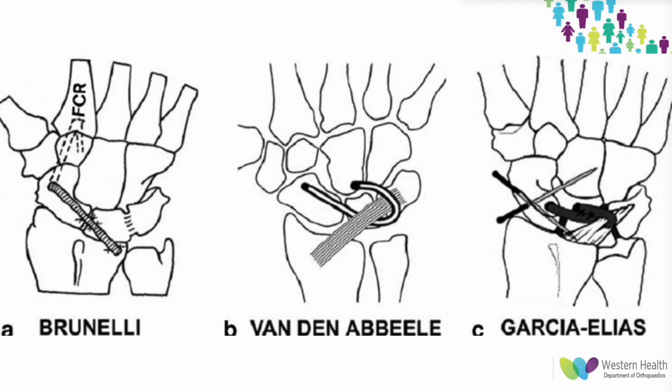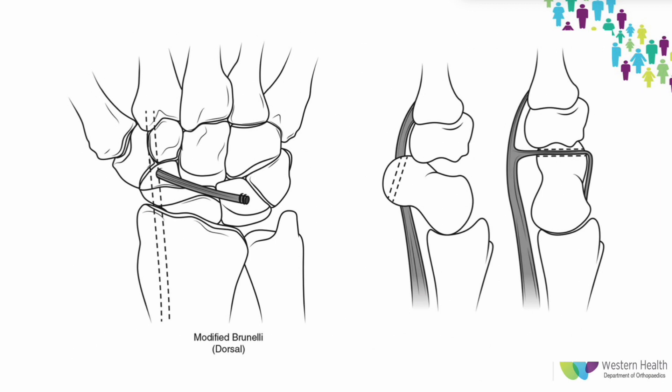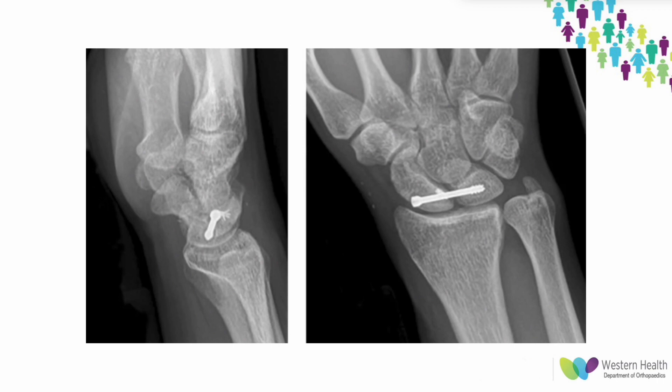The modified Brunelli tenodesis is shown here, demonstrating how the dorsal pull of the FCR slip reduces the rotatory subluxation and can also reduce widening of the scapholunate interval. Scapholunate screws have also been used to create a stable fibrous non-union — known as the RASL procedure (Reduction and Association of the Scapholunate) — with good long-term results, though there are reports of screw breakage and osteolysis requiring metalware removal. Screws can also be used instead of K-wires to immobilize soft tissue reconstructions.